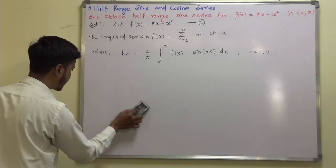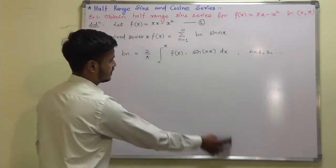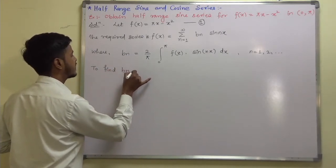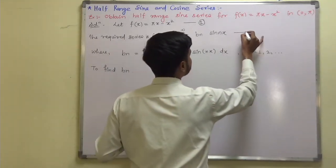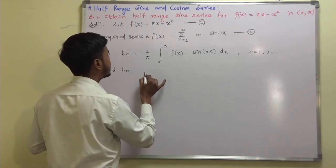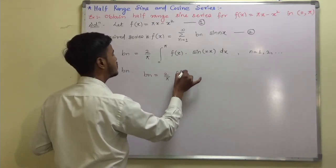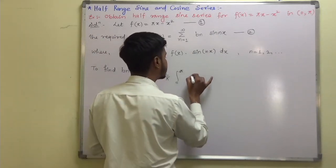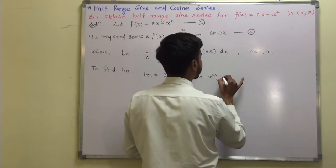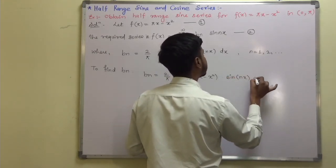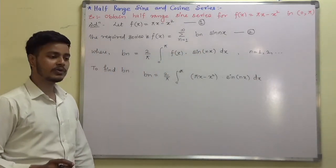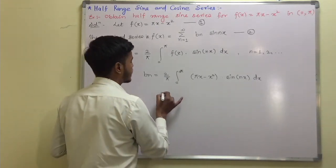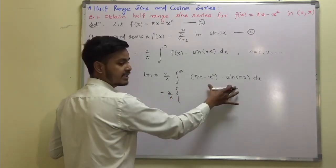We will solve this problem very systematically as always. To find bₙ: bₙ = (2/π) ∫₀^π (πx − x²) sin(nx) dx — call this equation 2. We are going to apply integration by parts.